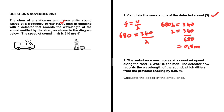The frequency emitted by the stationary ambulance is the same frequency detected by the detector, because the ambulance is stationary and the detector is also stationary — there is no relative motion. So the frequency emitted equals the frequency observed by the listener. That is the key to the first question. Now let's look at the second question.